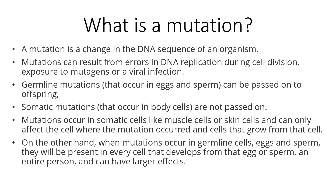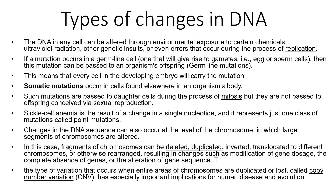There are a couple of different types of mutations. Firstly, germline mutations occur in the eggs and sperm and can be passed on to offspring during meiosis. There are also somatic mutations which occur in body cells and are not passed on. Mutations in somatic cells like muscle cells or skin cells can only affect the cell in which the mutation occurred and cells that grow from that cell. Where mutations occur in germline cells — eggs and sperm — they'll be present in every cell that develops from that egg or sperm and can have larger effects.